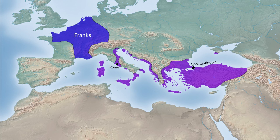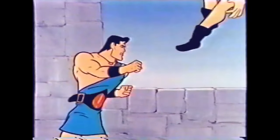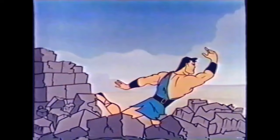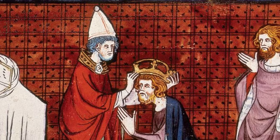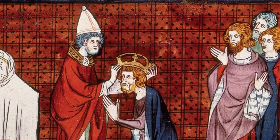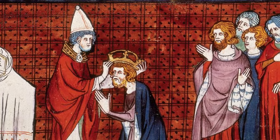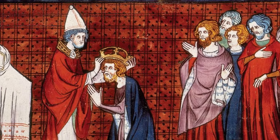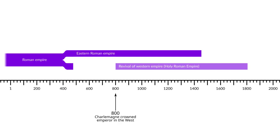The King of the Franks at the time was named Charles. He came down to Italy and fought against the Lombards and made Italy safe for the Romans. And in return for that, the Pope crowned Charles emperor — he restored the old defunct crown of the Roman Empire in the West. And so that King Charles, or Emperor Charles, is known as Charlemagne, which comes from the French for Charles the Great.